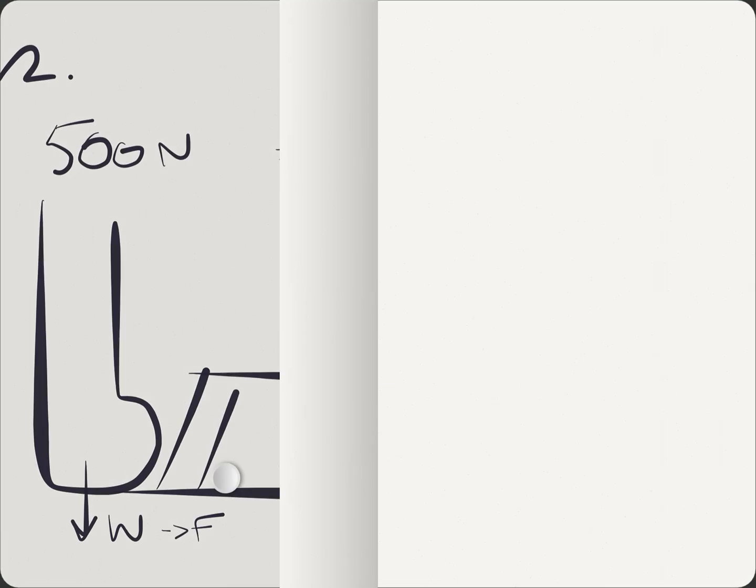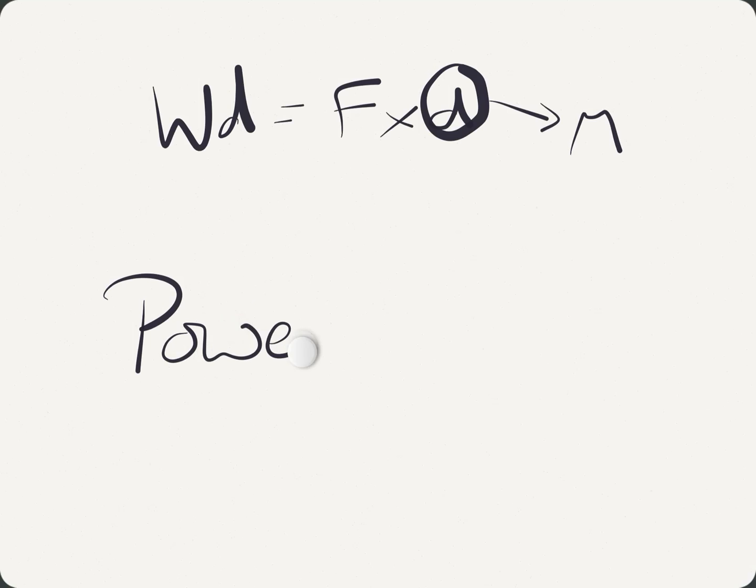So, to conclude. In this lesson, we used the work done equation, force times distance. We always checked our unit was in metres. We also used the power equation, where power is work done over time. And again, we never get caught out because our times are always in seconds. Any questions, come and see me. Thank you.